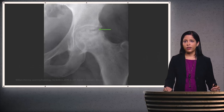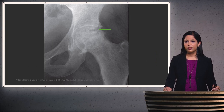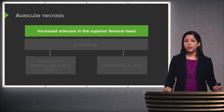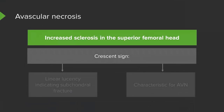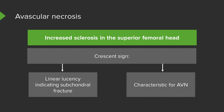This radiograph shows another example of the left femoral head with an arrow pointing to the abnormalities. There is increased sclerosis in the superior aspect of the femoral head. There is also what we call the crescent sign, which is a linear lucency indicating a subchondral fracture. This is also a very common sign seen in avascular necrosis.